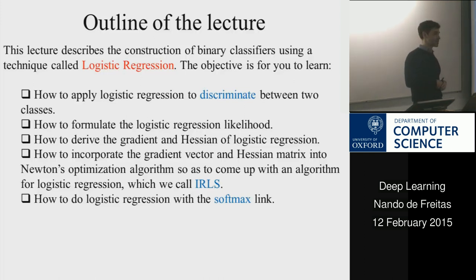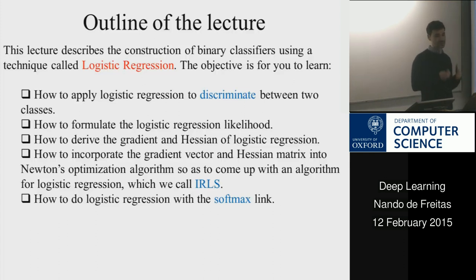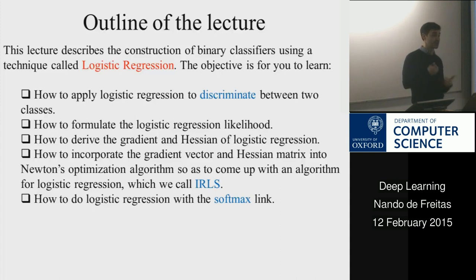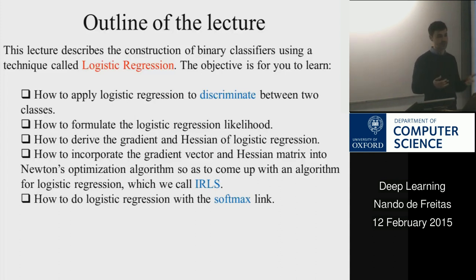The objective function is convex, so we can optimize it easily and very efficiently. We can run logistic regression with many, many features and many inputs. And so this is something that most internet companies use routinely all the time.